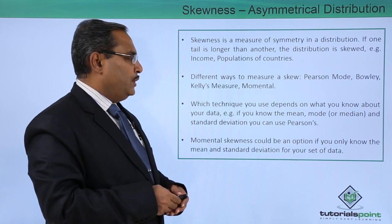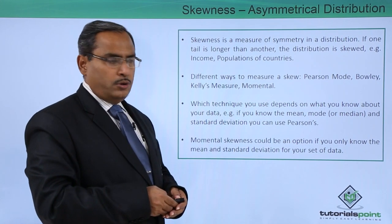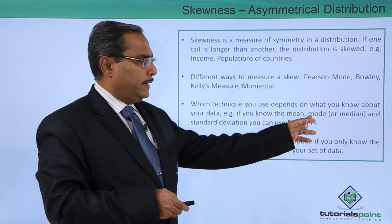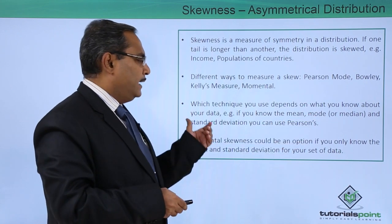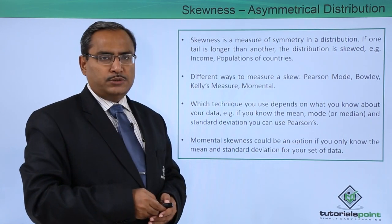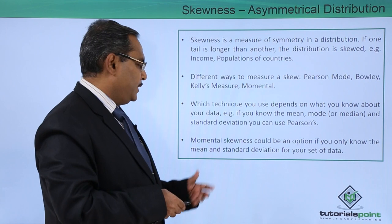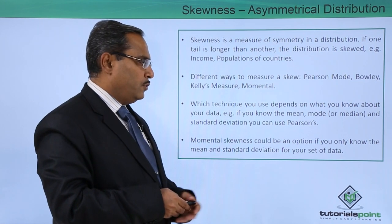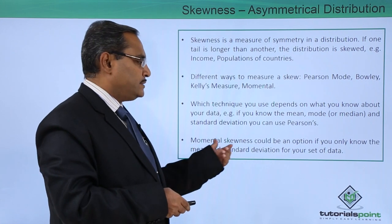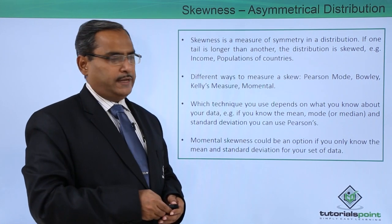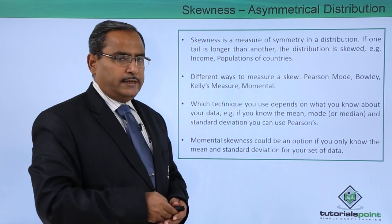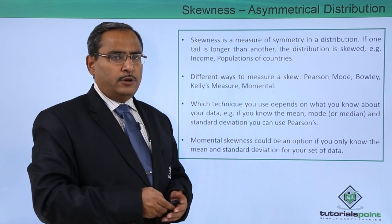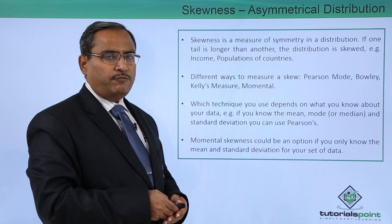For example, if you know the mean and mode, or mean and median, along with the standard deviation, you can use Pearson's method. Momental skewness could be an option if you know only the mean and the standard deviation of your dataset. So that will decide which calculation or technique will be applicable to get the skewness of a distribution.